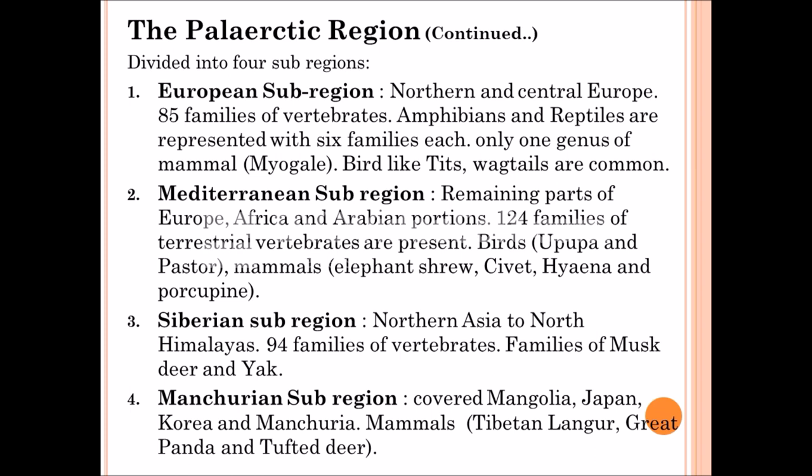The third one is the Siberian sub-region. It includes Northern Asia to the Northern Himalayas. It contains about 94 families of vertebrates. Families like musk deer and yak are present. The fourth one is the Manchurian sub-region. It covers Mongolia, Japan, Korea, and Manchuria. Here, mammals like Tibetan langur, great panda, and tufted deer are found.